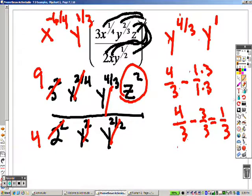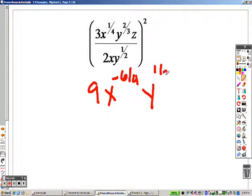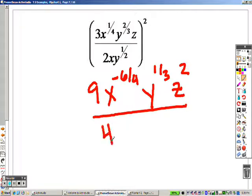So what I really have is, I have a 9, I have an x to the negative 6 fourths, I have a y to the 1 third, I have a z squared, and that's all over 4.